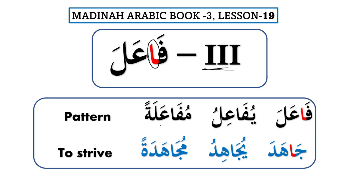The pattern for Form 3 is: فاعل يفاعل مفاعلة. The مصدر of Form 3 is مفاعلة, and we know that مصادر are fixed for the derived verb forms. Form 3 can also be named after its مصدر, so we can call Form 3 'مفاعلة'.